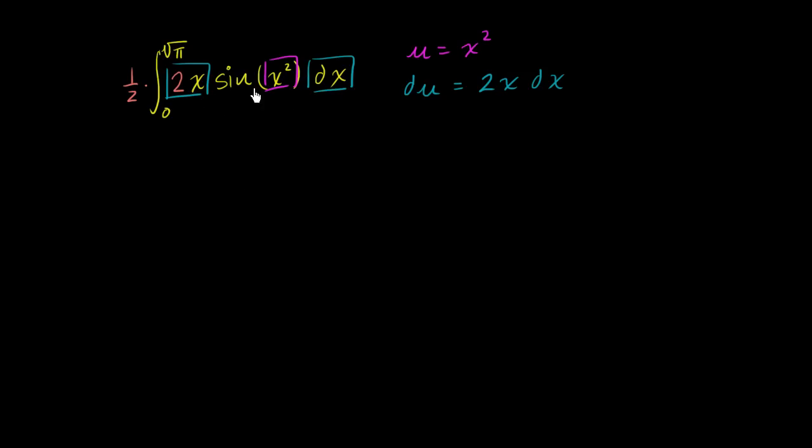So the thing that we're taking the definite integral of is going to be, we can rewrite it as sine of x squared, but x squared is just u.